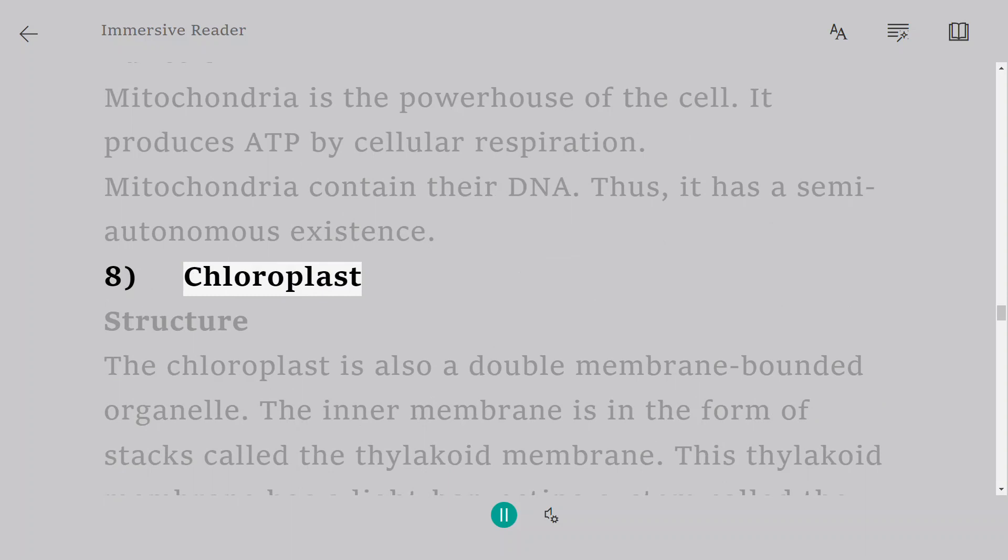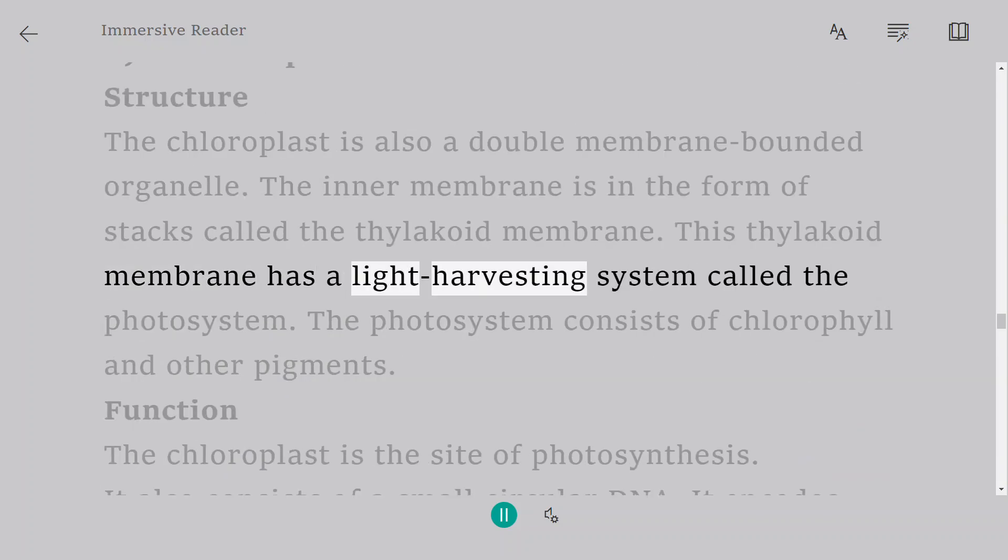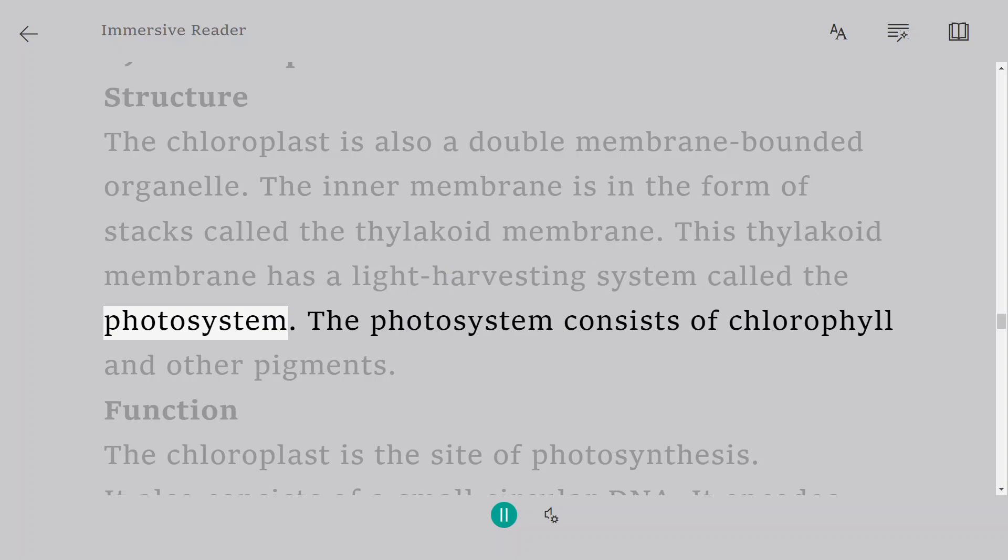8. Chloroplast. Structure: The chloroplast is also a double membrane-bounded organelle. The inner membrane is in the form of stacks called the thylakoid membrane. This thylakoid membrane has a light harvesting system called the photosystem. The photosystem consists of chlorophyll and other pigments.